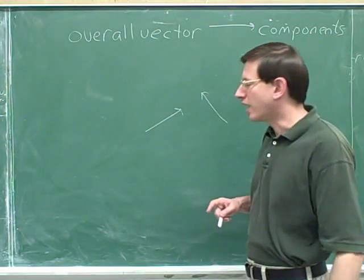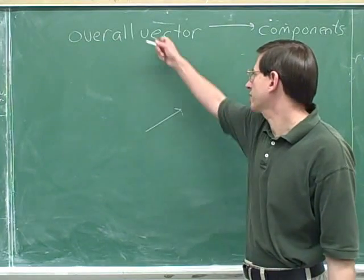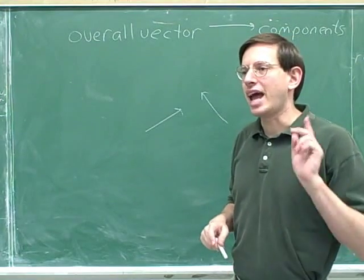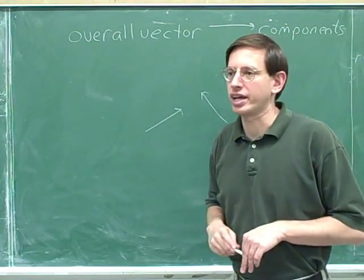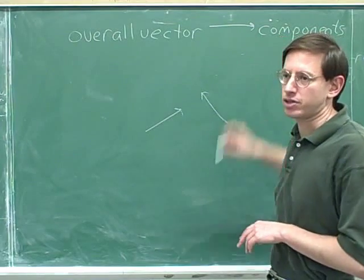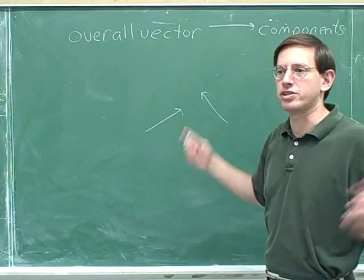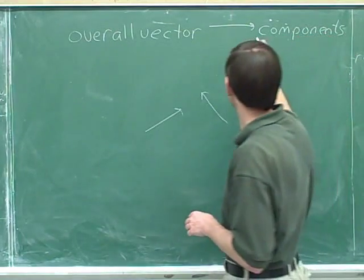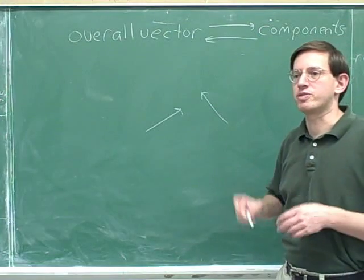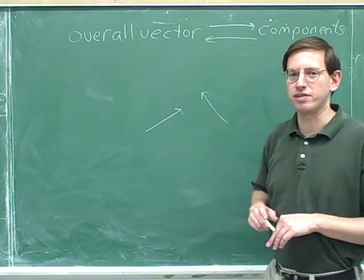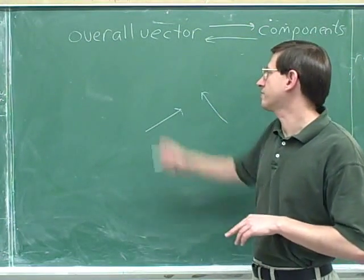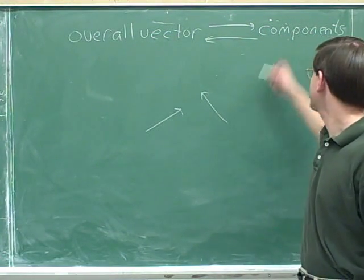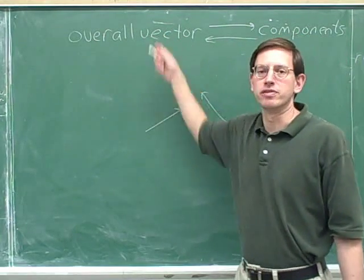Now we're ready to start learning the mechanics of that trick — how to take an overall vector and break it down into components. And after that, we're going to learn the opposite trick: if you know the components of a vector, you should be able to figure out what the overall vector is. Both types of problems need to be boringly easy for you.